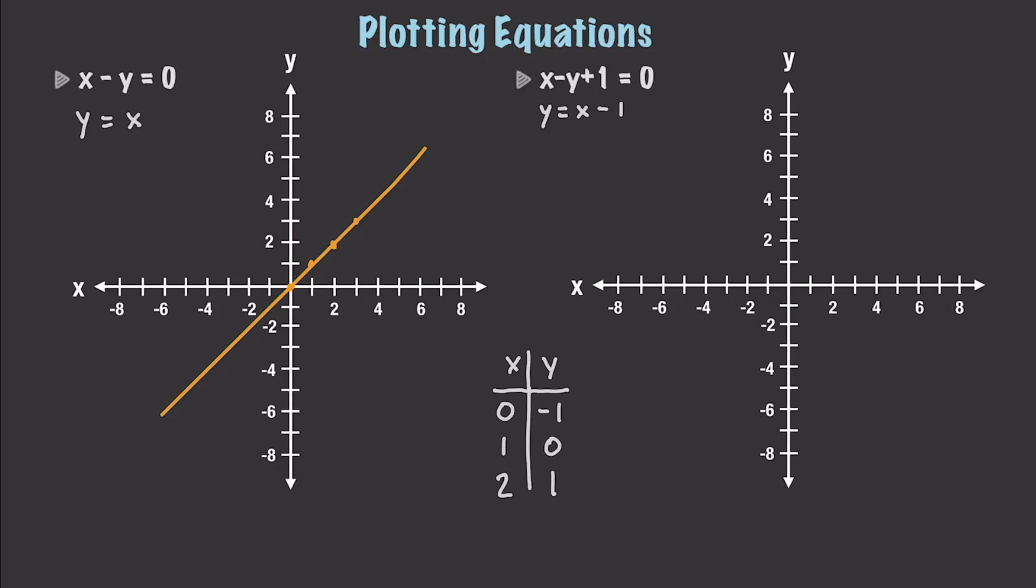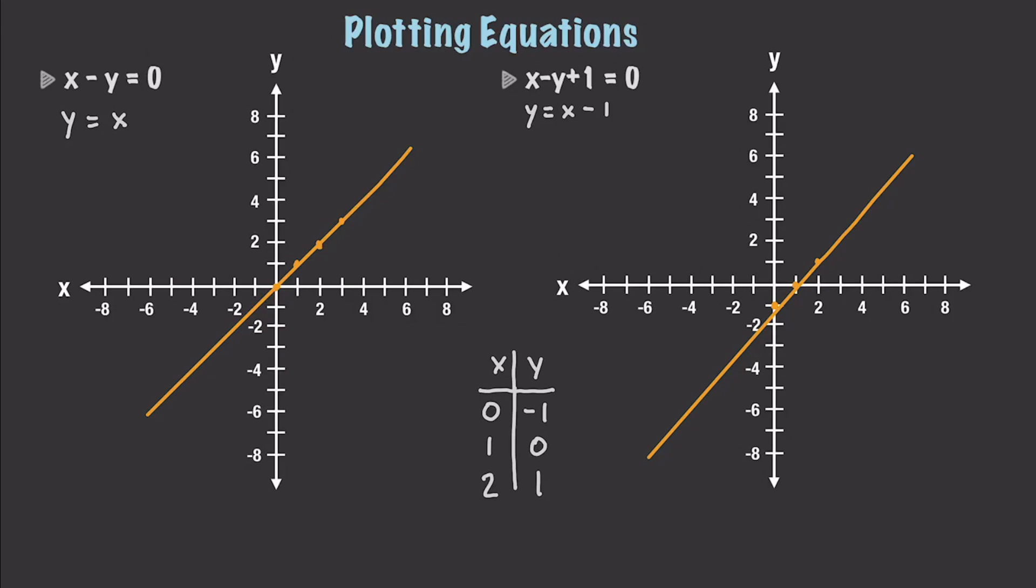And we can go and plot these points. So we can say when x is 0, y is negative 1. So put a point right there. Whenever x is equal to 1, y is 0. So we'll put a point right here. And then whenever x is 2, y is equal to 1. So we'll put a point right there. Then we can come in and we can draw a line. And that represents our equation once again. So that is it.